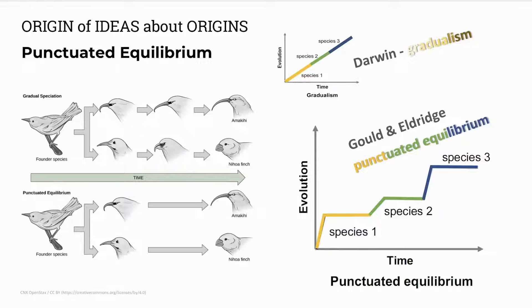On the other hand, Gould and Eldridge proposed a more recent theory to explain the gaps in the fossil record. They suggest sudden changes to form new species — punctuated — and then long periods of no change — punctuated equilibrium.